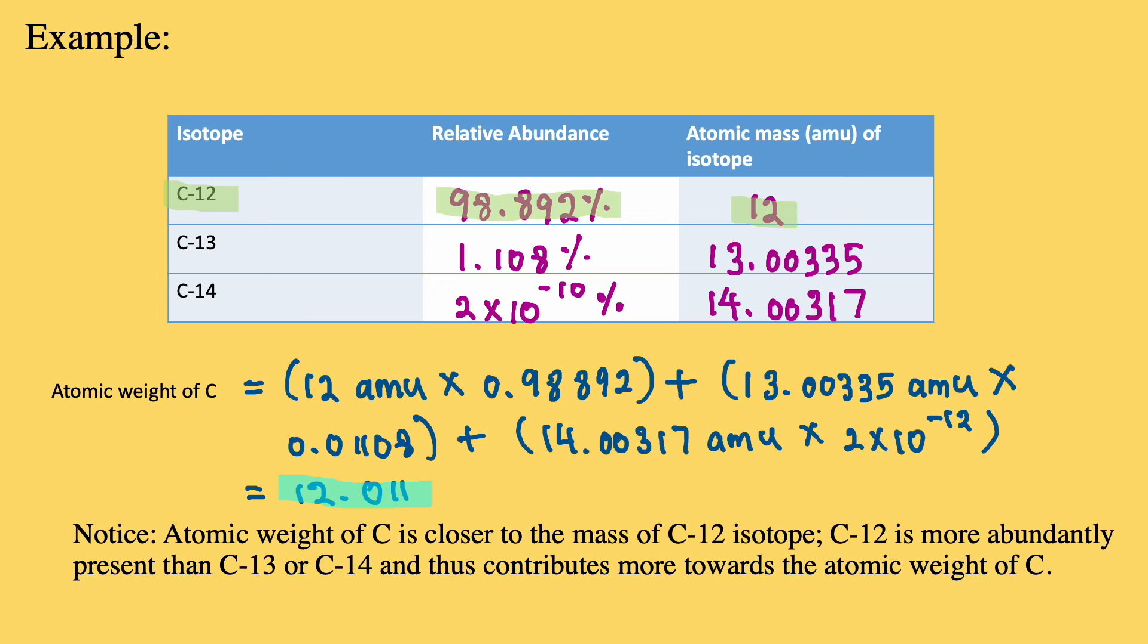Now, you may notice that the atomic weight of carbon, 12.011, is closer to the mass of carbon-12 isotope. This is because carbon-12 isotope is most abundantly present when compared to carbon-13 and carbon-14.